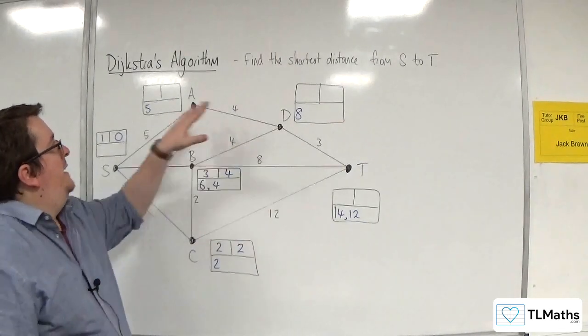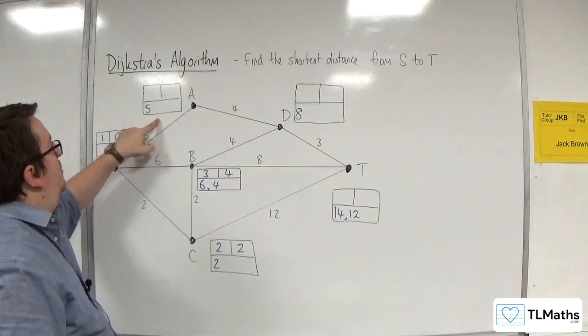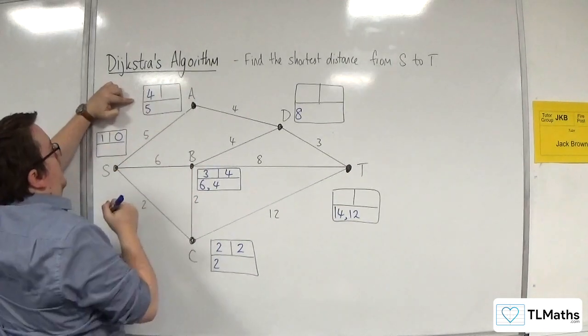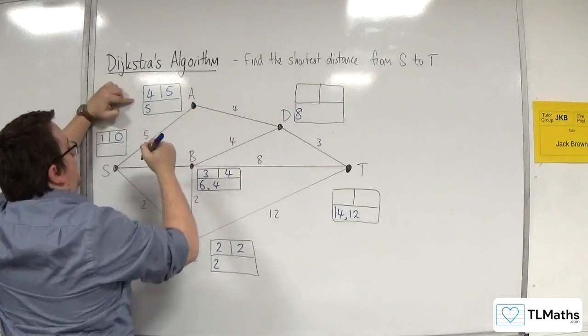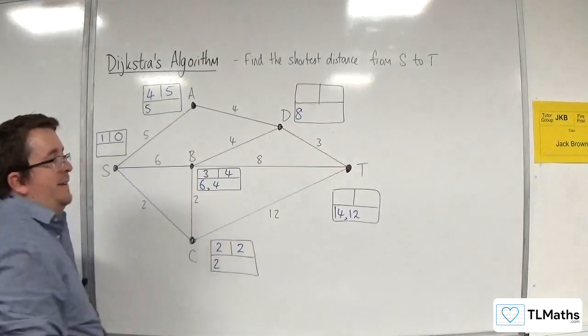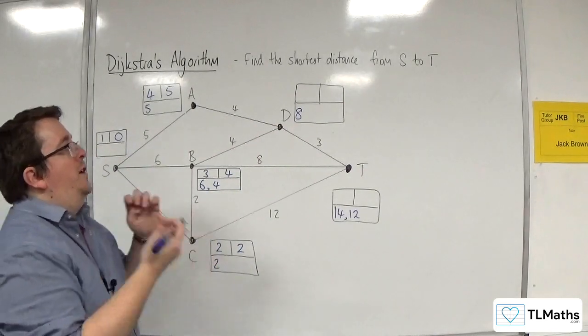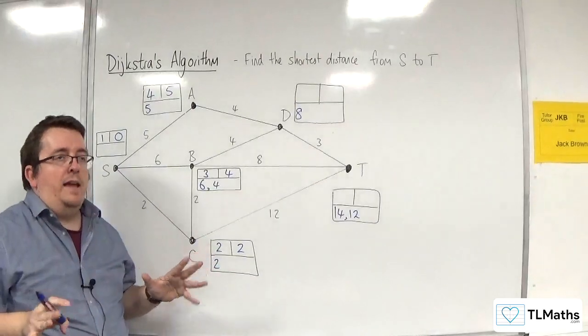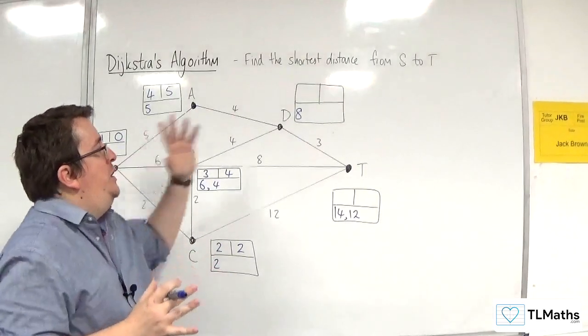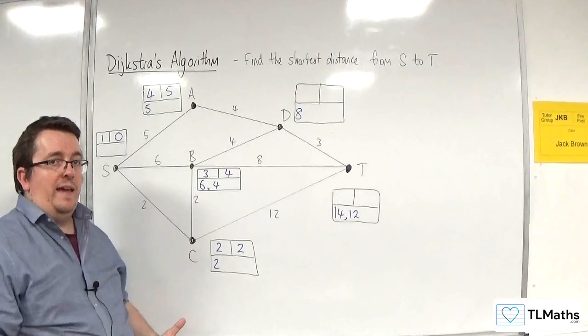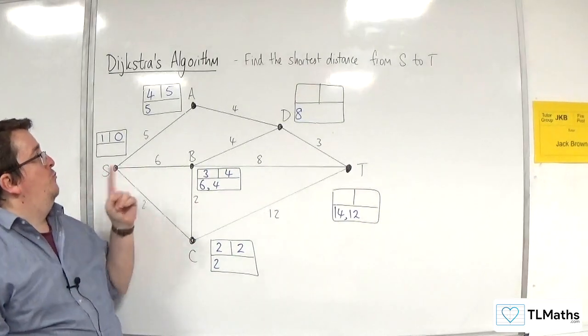So we've now got 12, eight, and five. Five is the next smallest. So this gets the order of labeling of four and the final value of five. Five plus four is nine, which is not better than eight. So because it's not better, I don't write anything down. I only write in a new working value if it is better than the one that is previously there. So I don't write nine in.